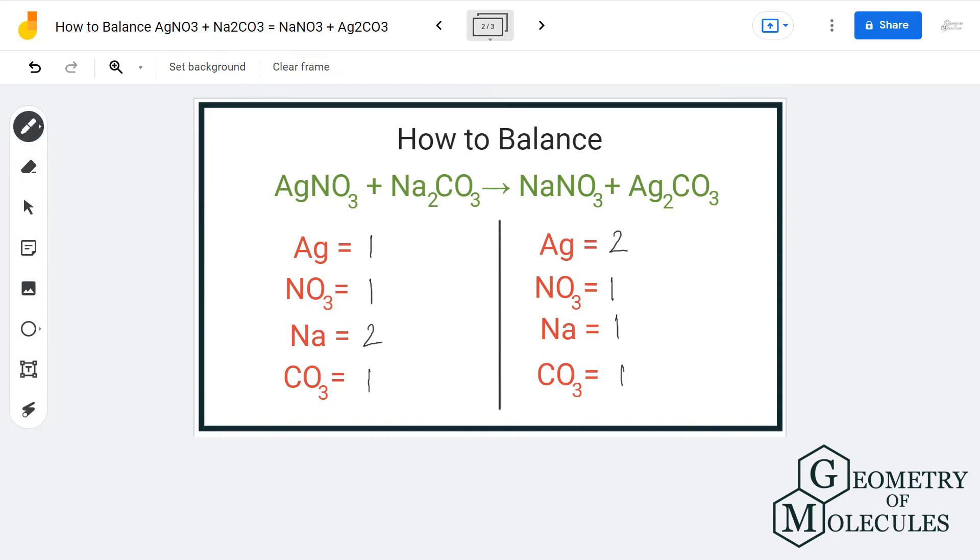That is not possible. To fix it, I am going to add a coefficient 2 to this, which will also change the number of NO3 ions. So now I have two NO3 ions on the reactant side, which means we need to fix it on our product side as well.